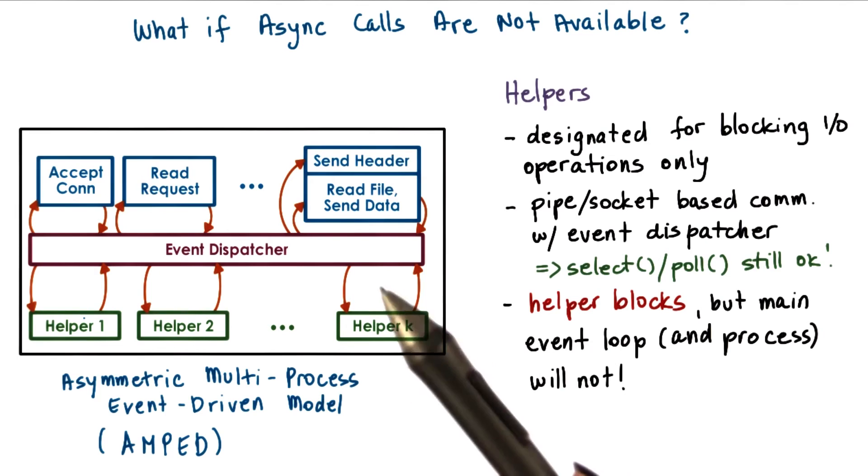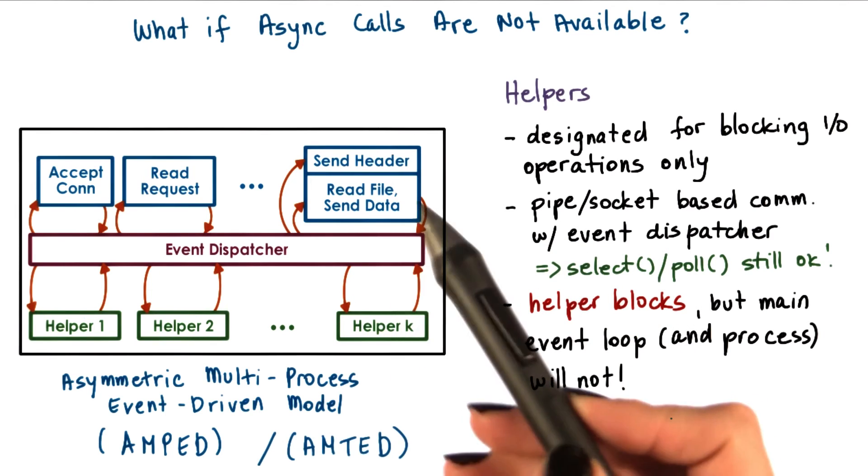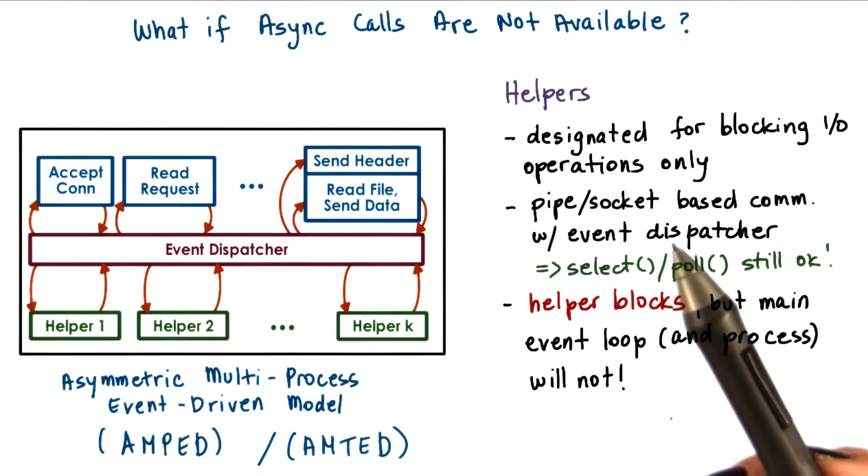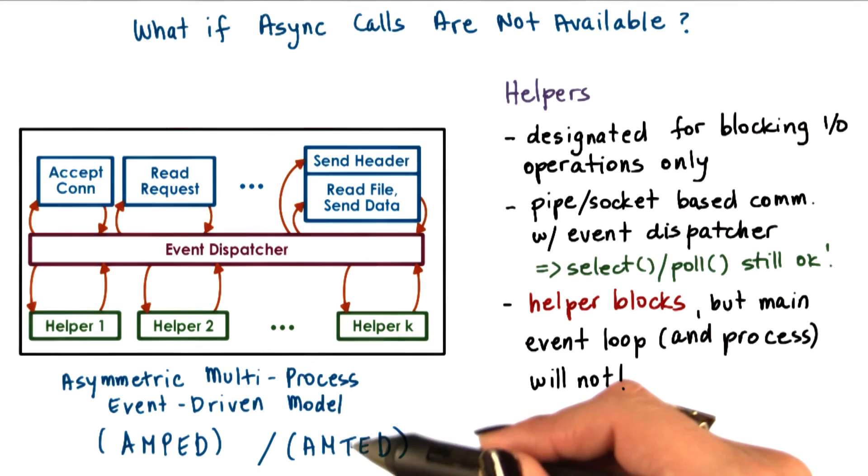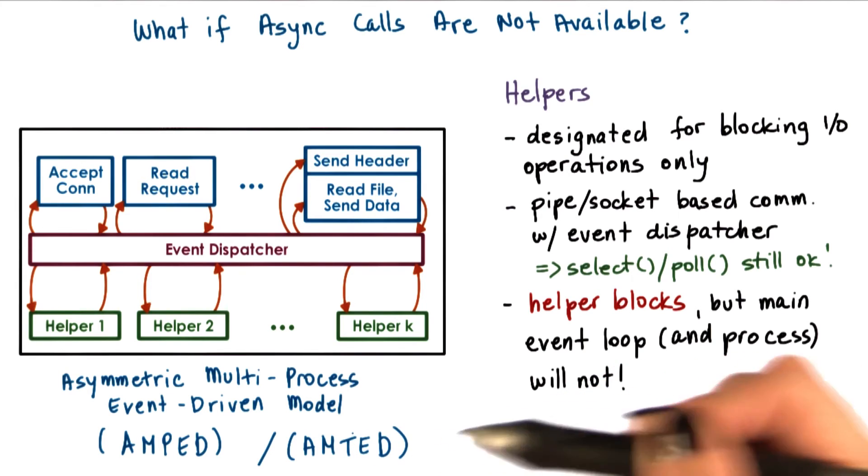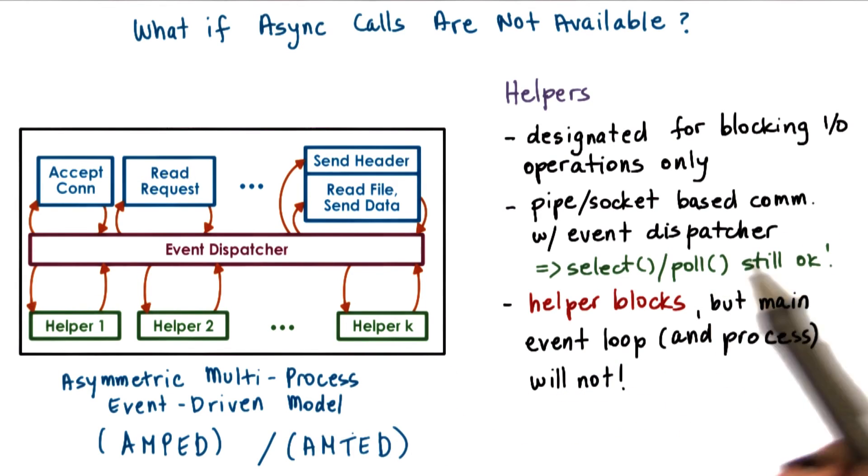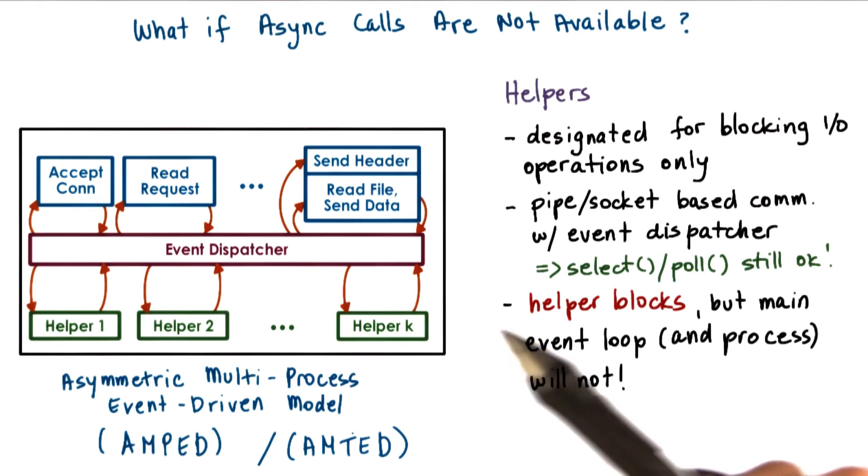In principle, the same kind of idea could have applied in a multithreaded scenario where the helpers are threads, not processes, so asymmetric multithreaded event-driven model. And in fact, there is a follow-on to the Flash work that actually does this exact thing, the AMTED model.